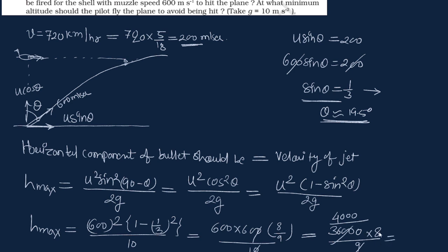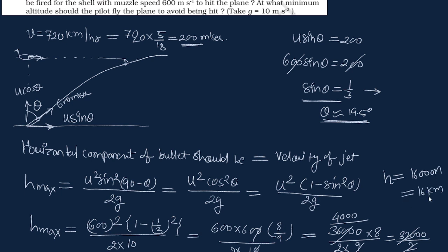Dividing by 2, we get 16,000 meters, which is approximately 16 kilometers. So H_max is 16 km — that is the minimum altitude the fighter plane must maintain to avoid being hit. That is the answer. Thank you very much.